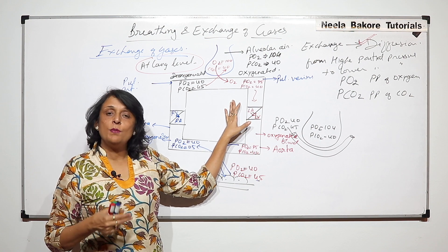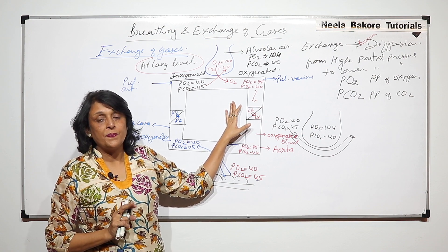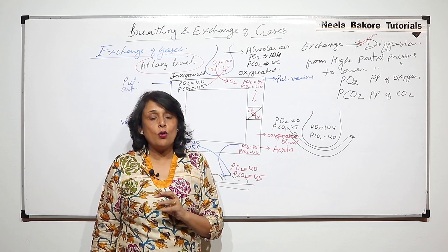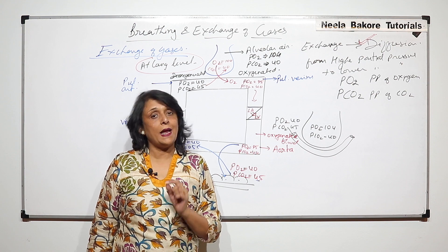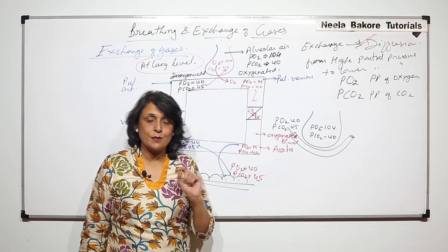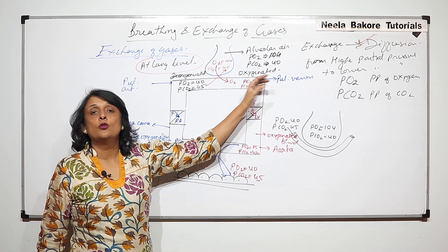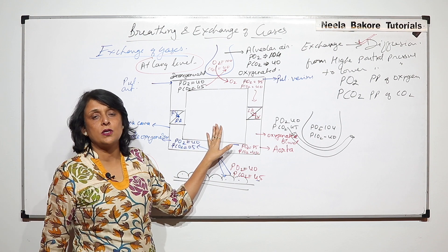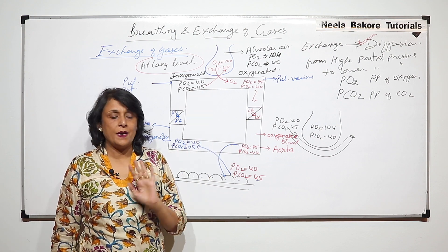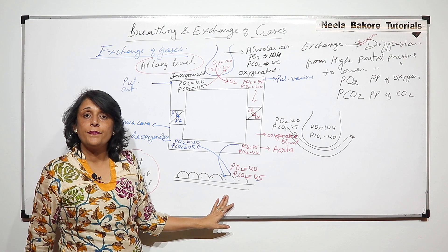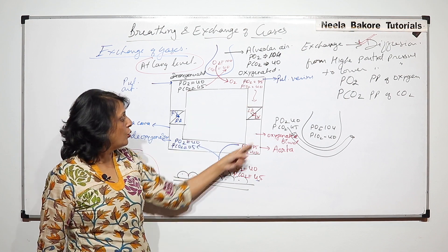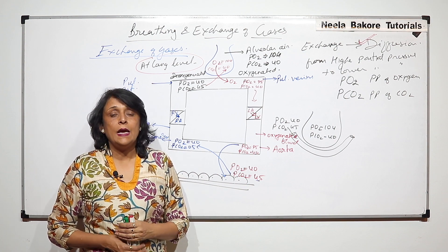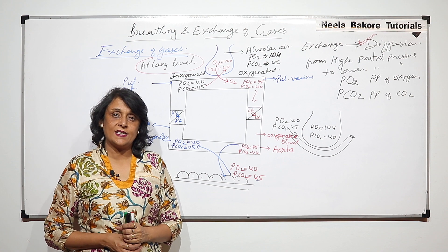We have also seen how gases are transported: oxygen travels bound to hemoglobin plus a small amount dissolved in plasma, while carbon dioxide is transported in three forms — as bicarbonate ions, bound to hemoglobin as carbaminohemoglobin, and dissolved in plasma as carbonic acid. But the exchange process itself is always passive — simple diffusion from higher to lower pressure. In the next part, we will discuss pulmonary air volumes and capacities.